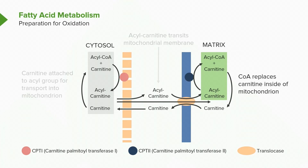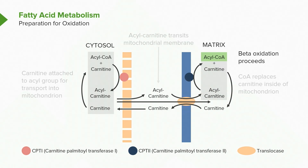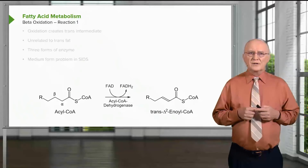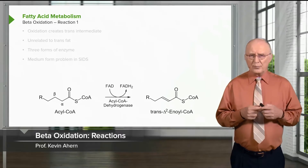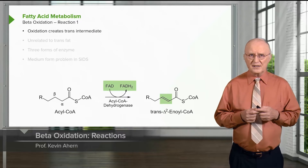What we've described here is a shuttle — the shuttle carries the acyl group from the cytoplasm into the mitochondrion. We now have an acyl-CoA inside, and the acyl-CoA is the target for oxidation. Beta-oxidation proceeds starting with that acyl-CoA, and we can now go through the step-by-step process whereby a fatty acid is oxidized.